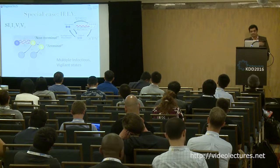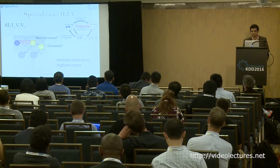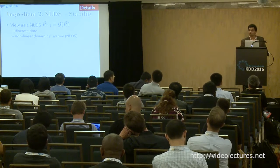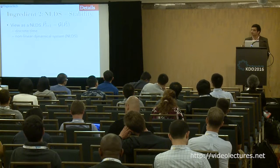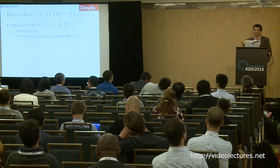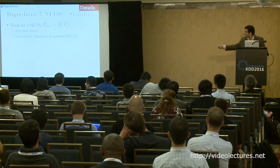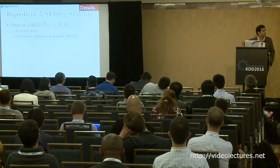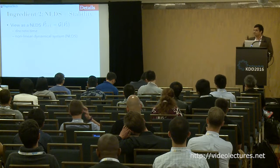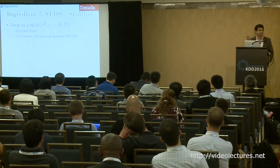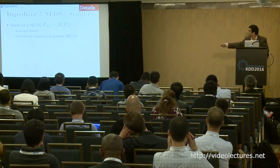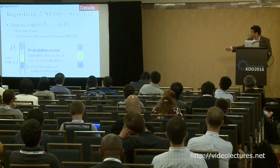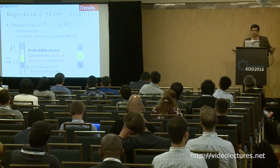The second ingredient is nonlinear dynamical systems (NDLS) and stability theory. The idea: view the model on the graph as a nonlinear dynamical system. The probability of each node being in any of M states at time T+1 depends on a big nonlinear function G of the previous probability. The probability vector specifies the state at time T — for three states it gives the probability of node 1 being in S, I, or V, which must sum to one. G explicitly gives the evolution of the system.